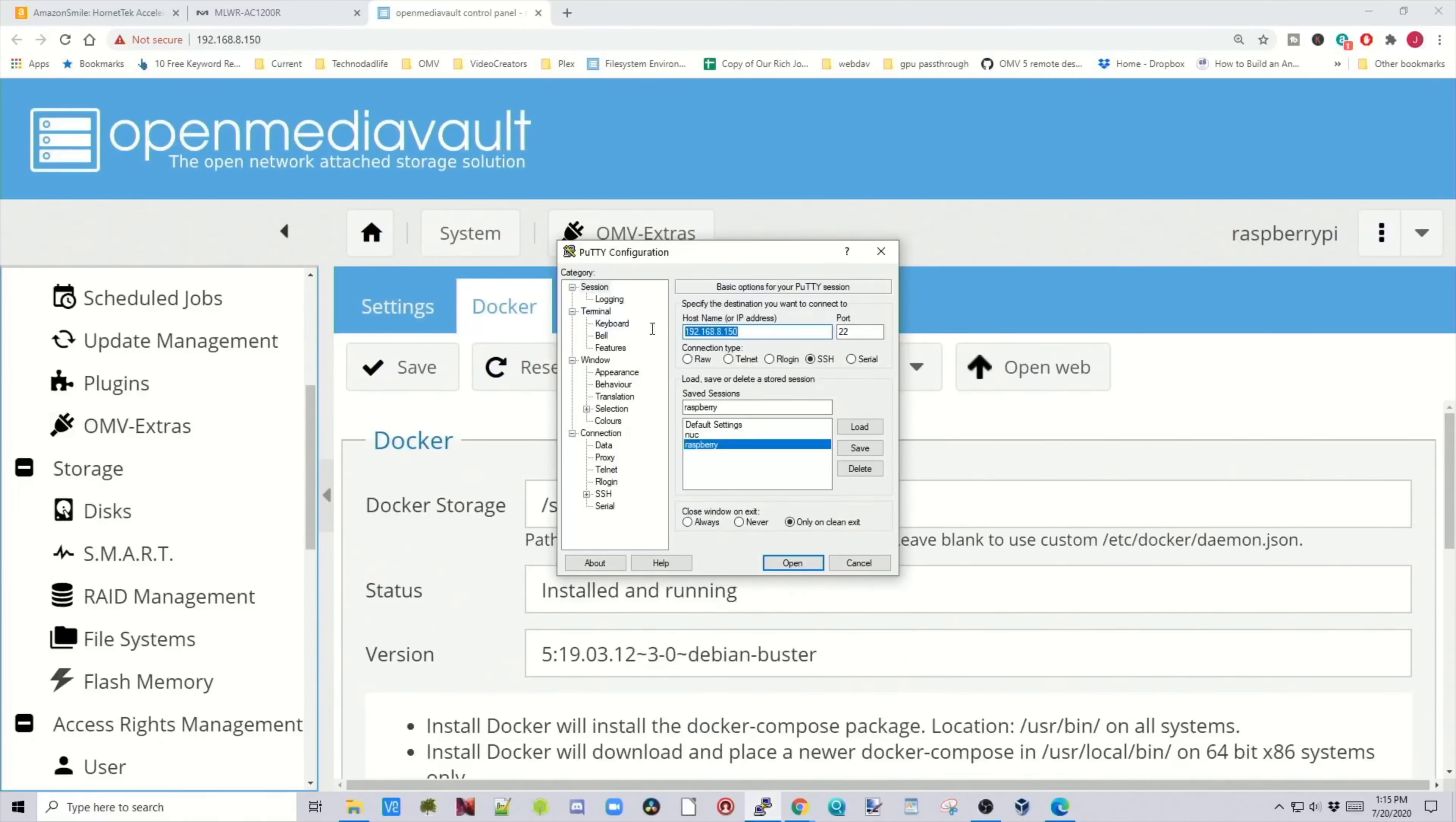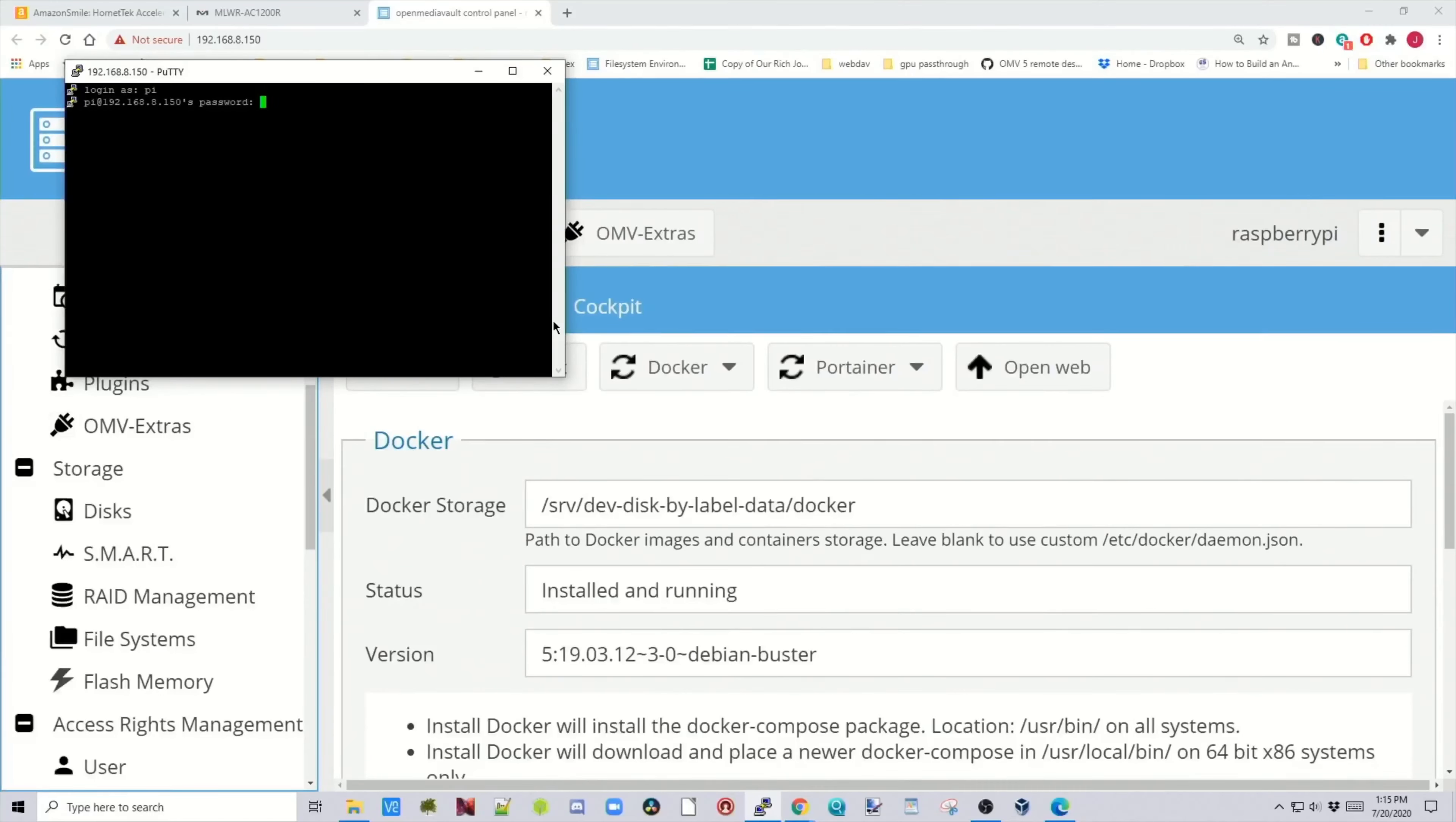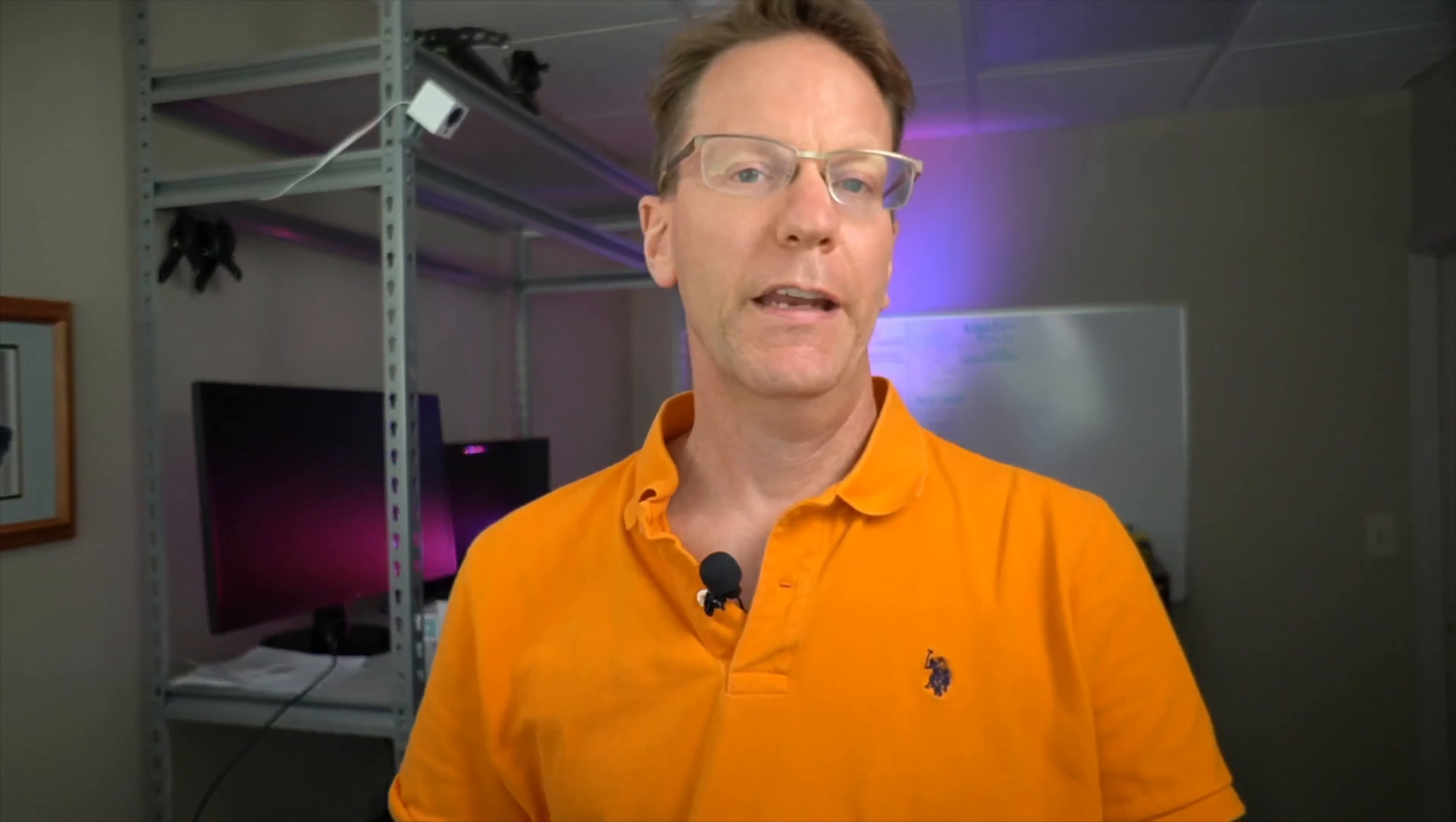Now open up PuTTY, put in the IP address of your server, click Open. Log in as Pi and Raspberry if you haven't changed it, and then we're going to type in sudo space system ctl space edit space docker dot service, hit enter, type in start limit interval equals 300 seconds, and that will delay Docker startup, then hit control X, and then Y, and then enter.